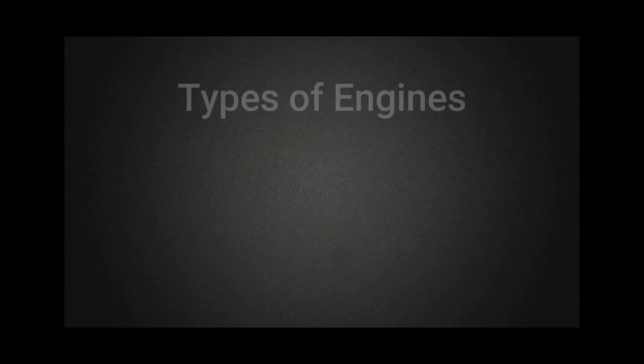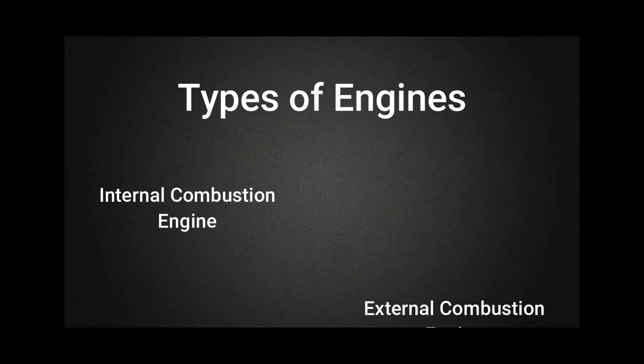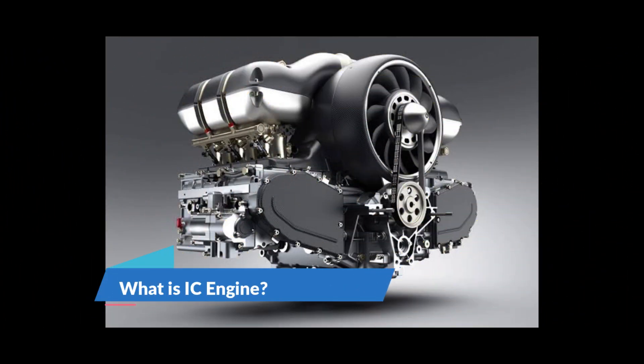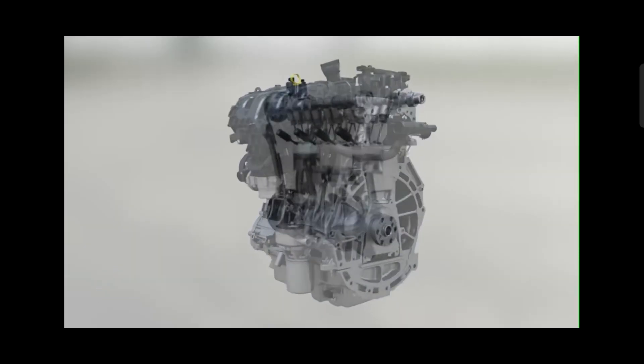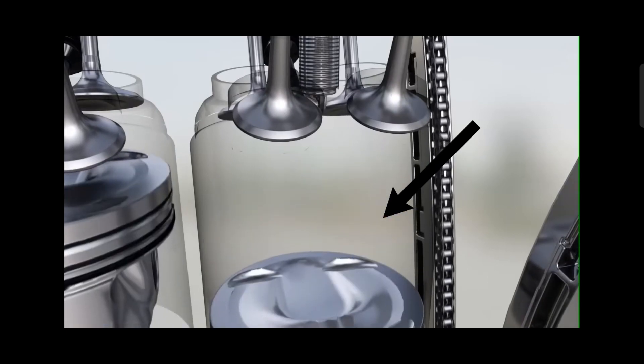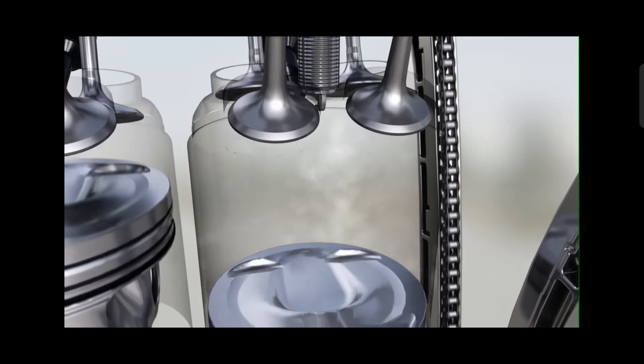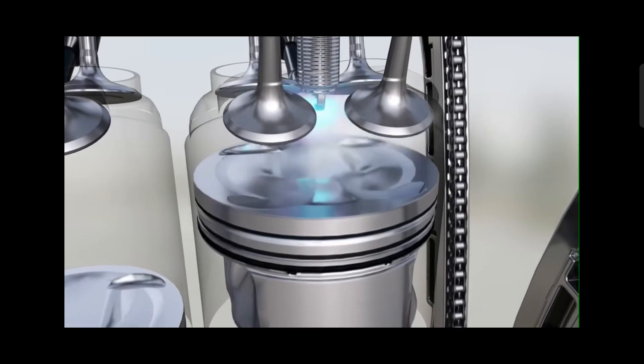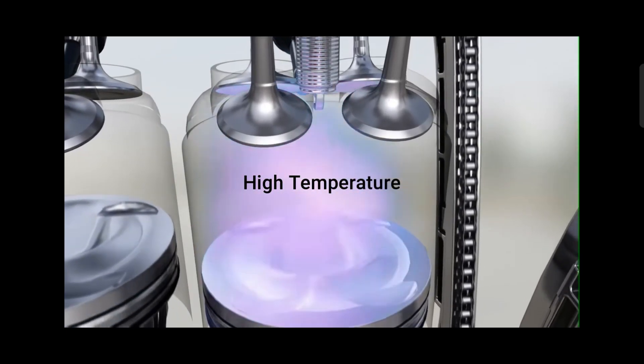The major distinction between engines is internal combustion engine and external combustion engine. An internal combustion engine is a type of heat engine where the combustion of fuel takes place inside the chamber. When the fuel burns inside the engine, it causes the temperature and pressure to increase.